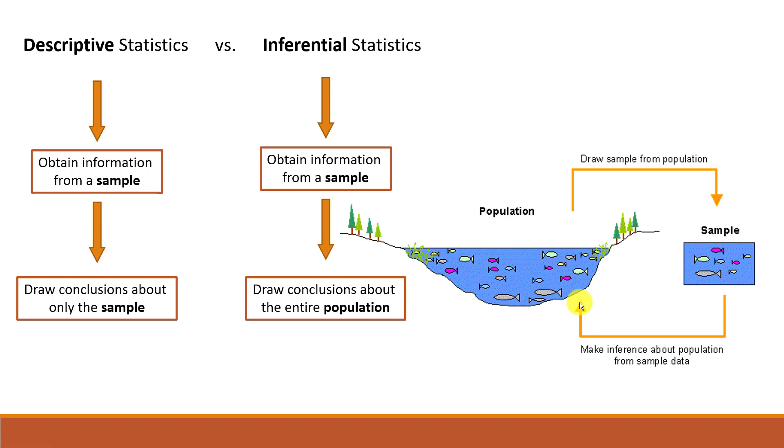We say that we make inference about population from sample data. It's important to note that this kind of generalization contains uncertainty, because a sample cannot tell us everything about a population. Therefore, inferential statistics includes a level of confidence in the result. For example, we might say that we're 95% confident that there are between 65% and 70% of trouts in that lake.